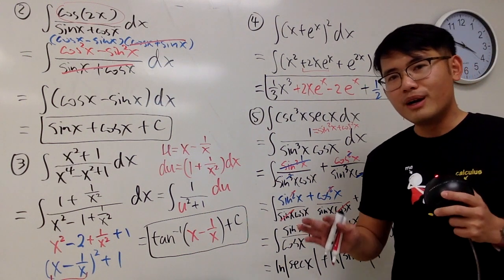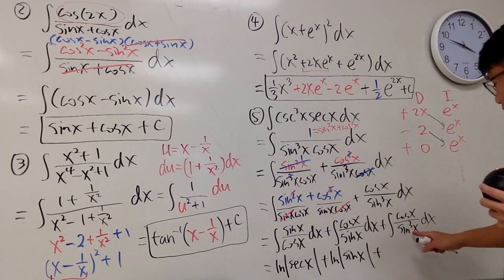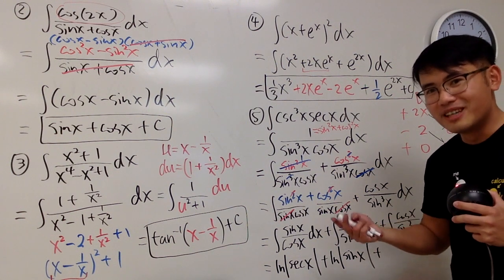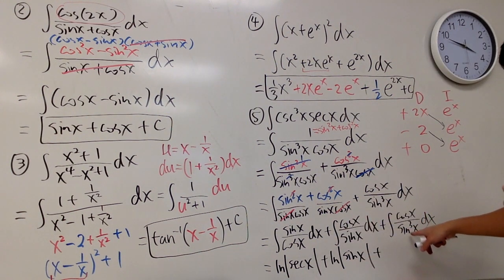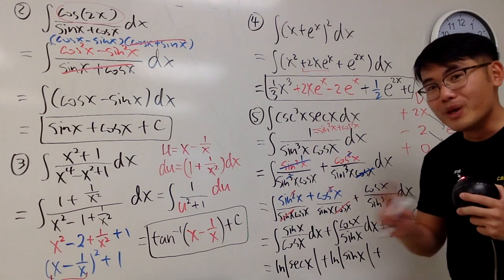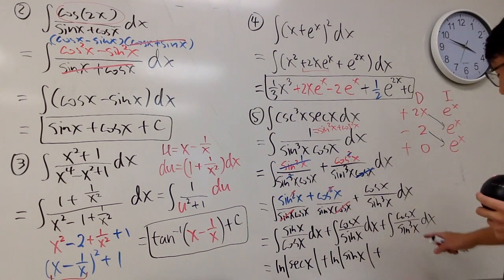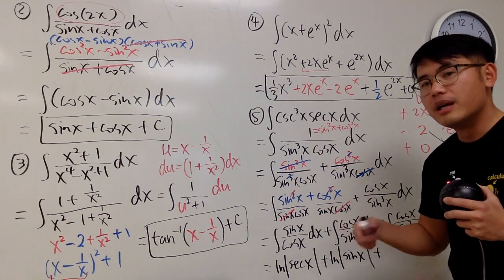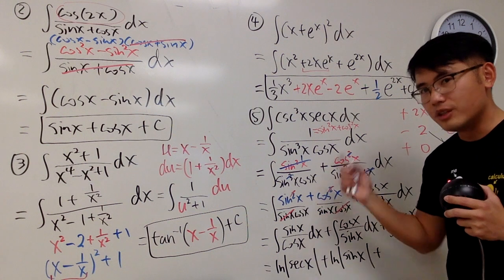Lastly, we do not have the ln addition. This right here is going to give us 1 over u to the third power, because you have that sine to the third power, and we cannot do the natural log. All right, so 1 over u to the third power, in other words, u to the negative 3, plus 1, which is negative 2, divided by that.